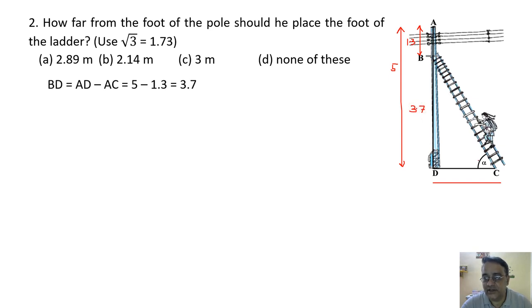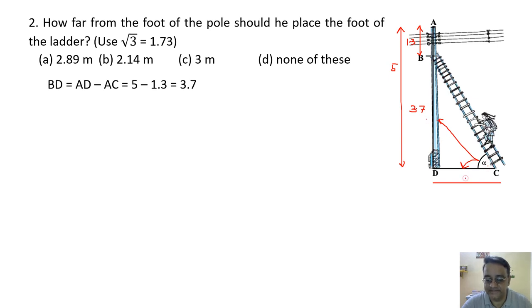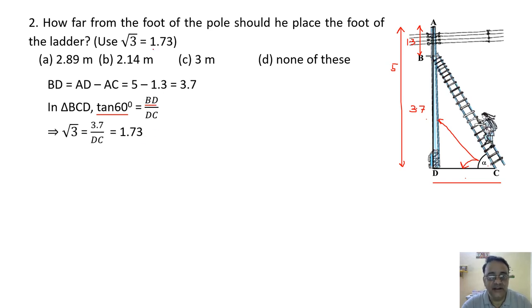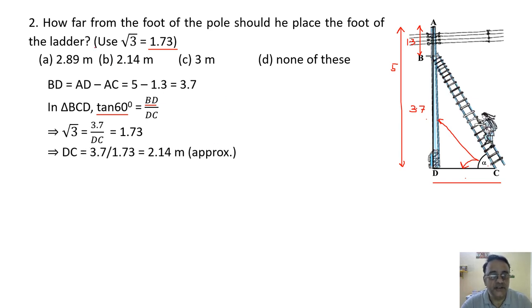With respect to alpha, BD is the opposite side and DC is the adjacent side. We use tan θ: tan 60° = BD/DC. The value of tan 60° is √3 and BD is 3.7, so DC = 3.7/1.73, which is approximately 2.14 meter. The correct option is option B.